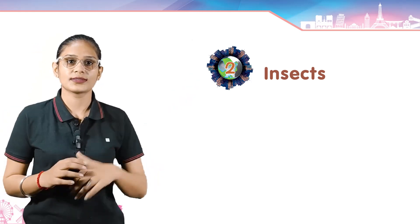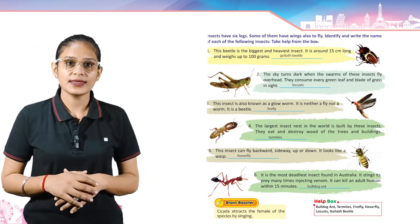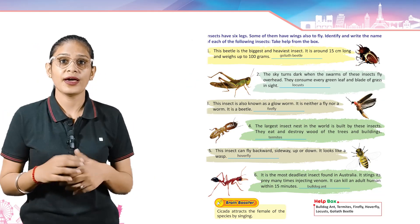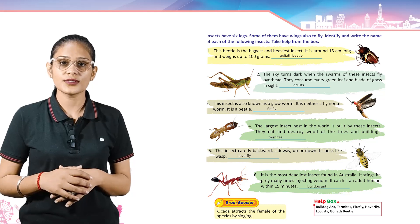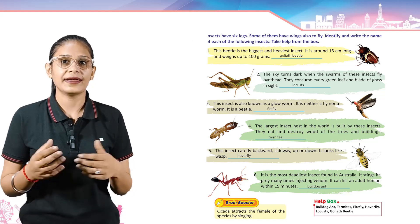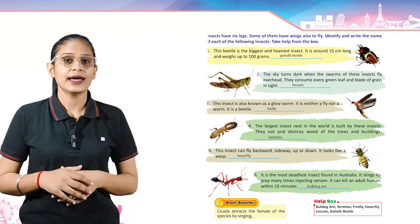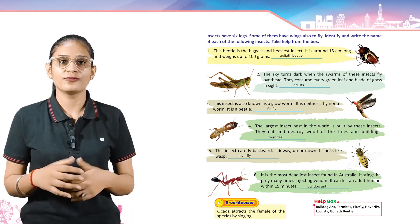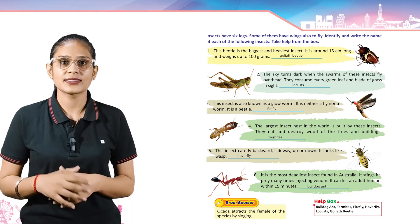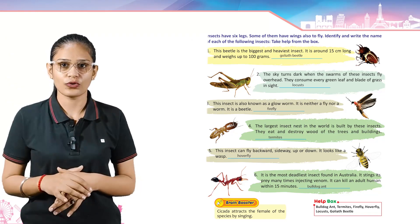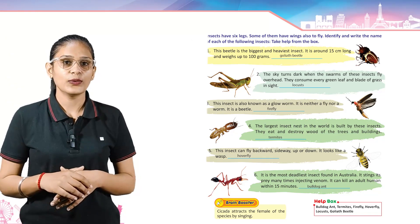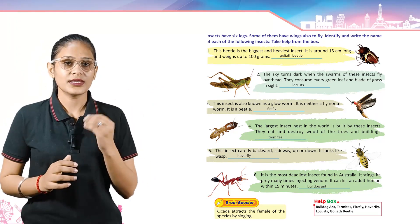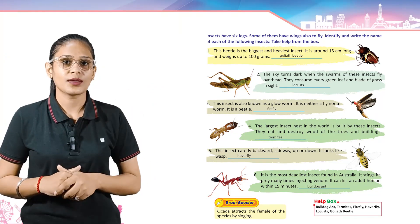Chapter 2: Insects. An insect has six legs; some of them also have wings to fly. Identify and write the name of each of the following insects. Take help from the books. Look here — the first one: